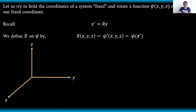Now, let us try to hold the coordinates of a system fixed and rotate a function ψ(x, y, z) relative to our fixed coordinate. We recall that if we have x prime, or if we have this rotated coordinate system, this is actually just equal to the rotation factor or rotation matrix, denoted by R times x, where x is basically our original coordinate system. We define R on ψ by this mathematical equation, and this is equal to ψ prime as a function of x, y, z, which could just be equal to ψ times x prime.